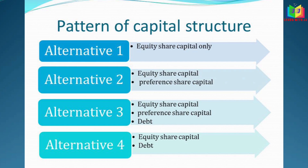To repeat: in the first pattern, the company raises funds only by issuing equity shares. In the second pattern, the company raises by issuing both equity shares and preference shares. In the third pattern, some proportion is equity, some is preference share, and some is debt. In the fourth pattern, the firm raises by issuing equity shares or by borrowing money through loans or debentures.